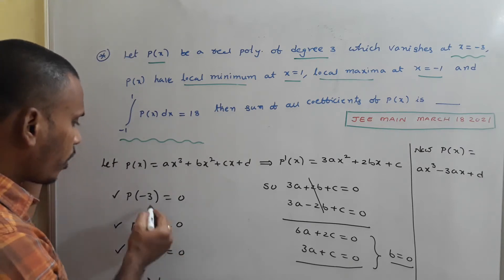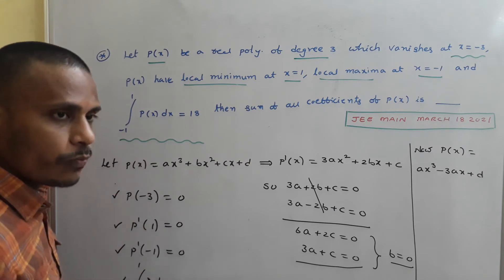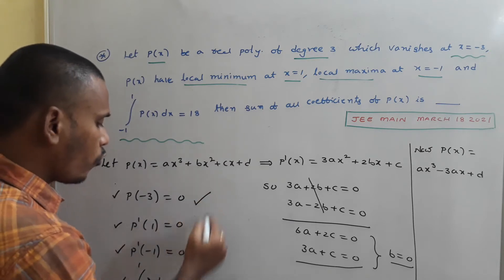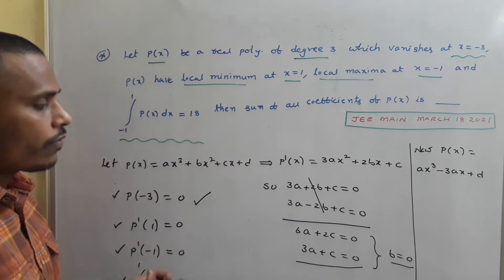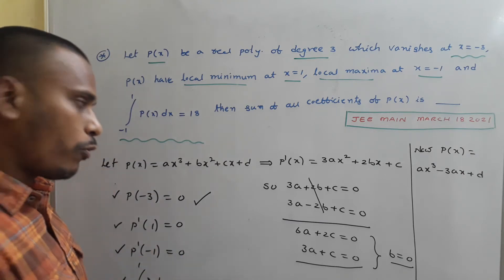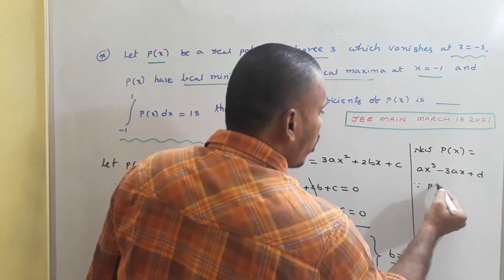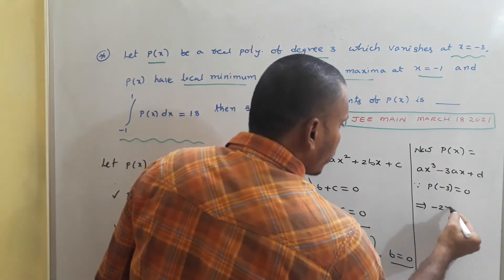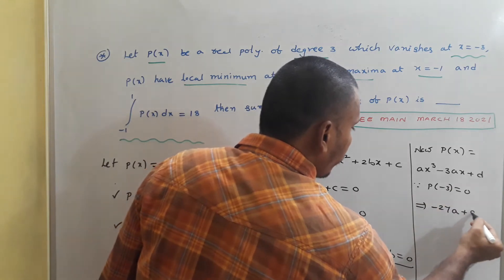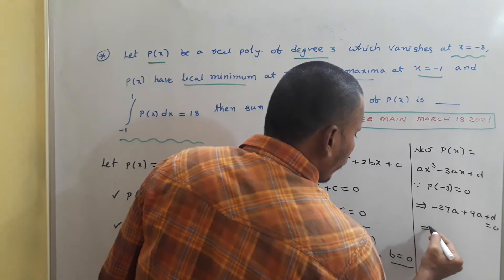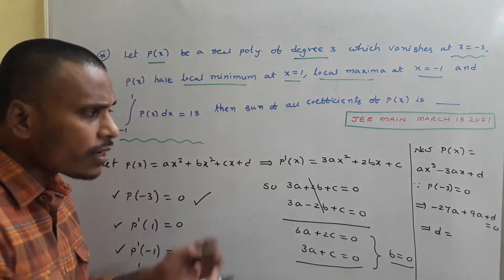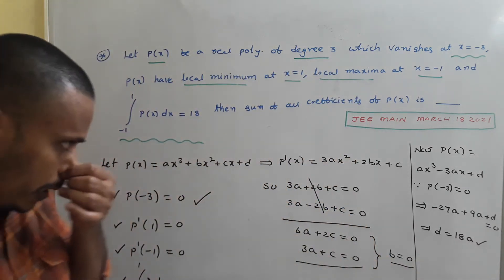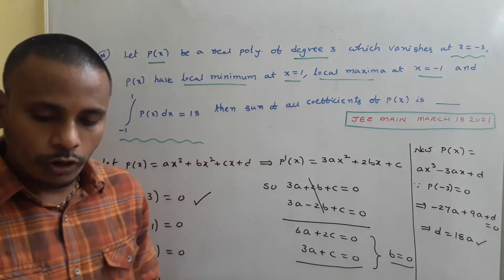Now using P(-3) = 0: substituting x = -3 gives -27A - 3(-3A) + D = -27A + 9A + D = 0, so D = 18A. We now have C = -3A, B = 0, D = 18A. We apply the integral condition next to find A.